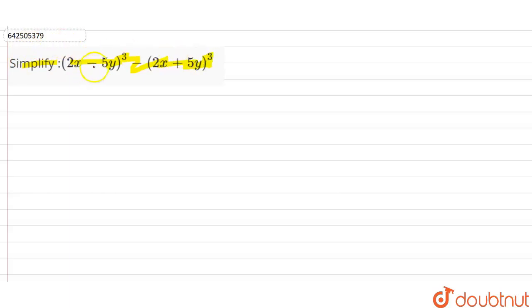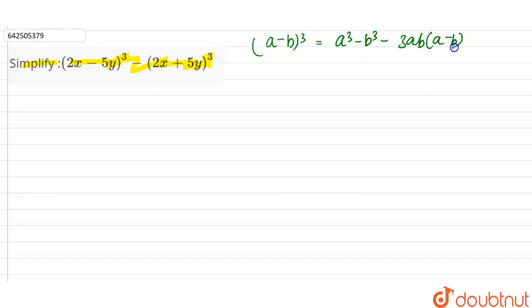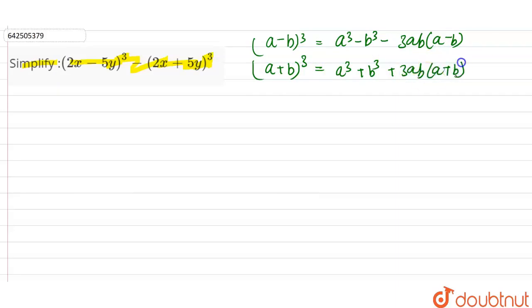In this question, we are going to use two identities. The first identity is (a minus b) whole cube, which is equal to a cube minus b cube minus 3ab into (a minus b). The second identity is (a plus b) whole cube, which is equal to a cube plus b cube plus 3ab into (a plus b). We are going to use these two identities in this question.